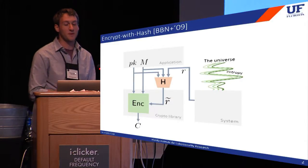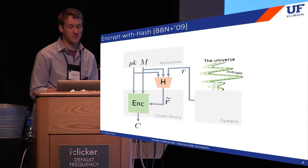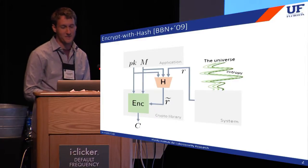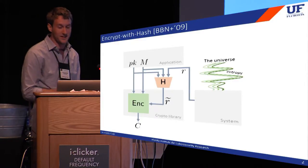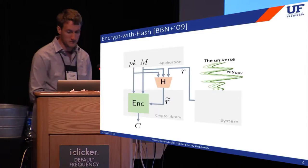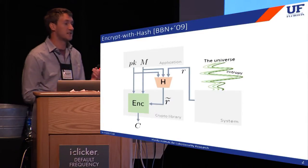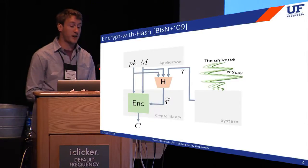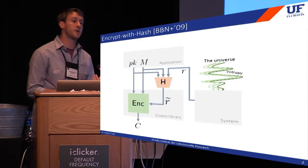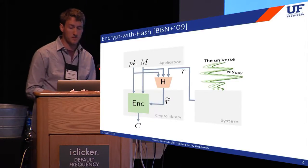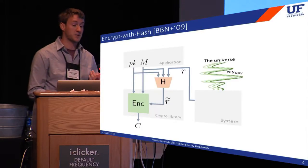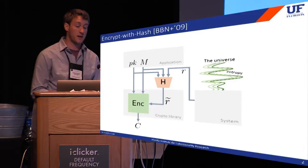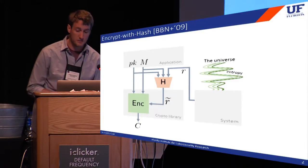In their seminal paper at AsiaCrypt 2009, Bellari et al. proposed a nice solution for hedged public key encryption. Their idea is to synthesize fresh coins for encryption using the randomness provided by the system as well as any entropy contained in the message being encrypted. To do this, we just hash together the public key, message, and randomness and use the output as the source of randomness for any standard PKE scheme.